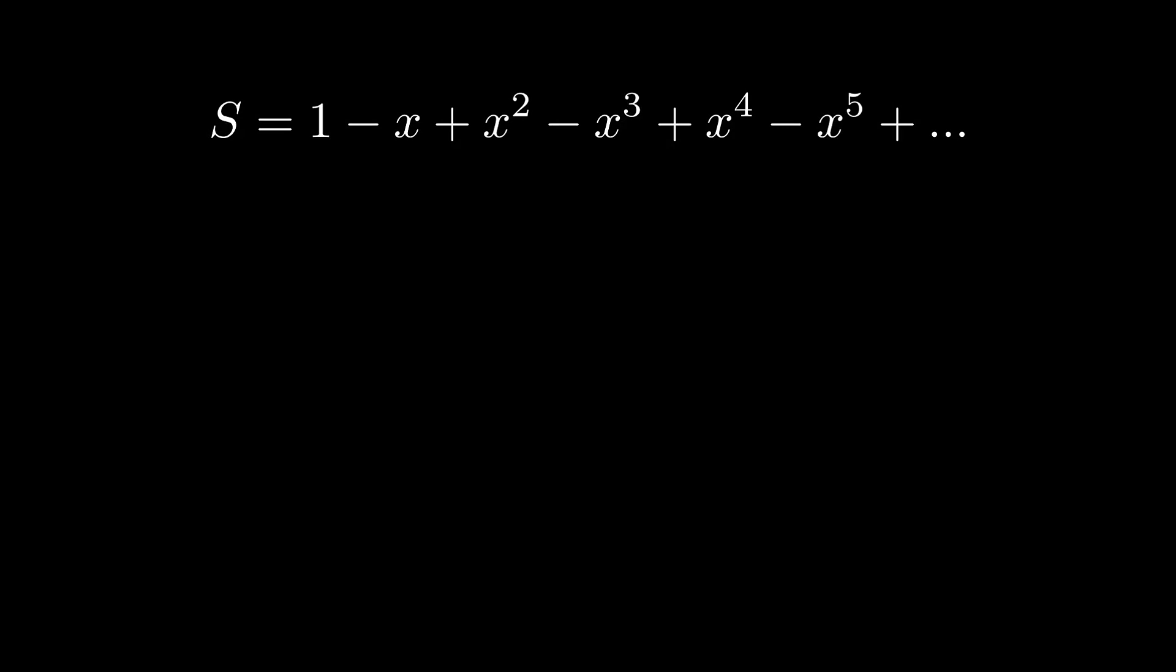This series goes to infinity and converges only when the values of x is between negative 1 and 1. This is because as we keep adding more terms, the bigger power of x gets so small that we can ignore them. Then, our series will settle down to a specific value, no matter how many terms we add.